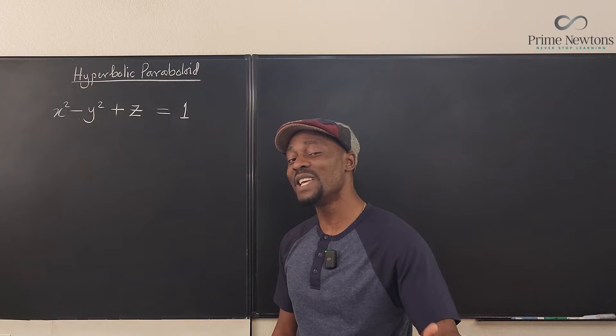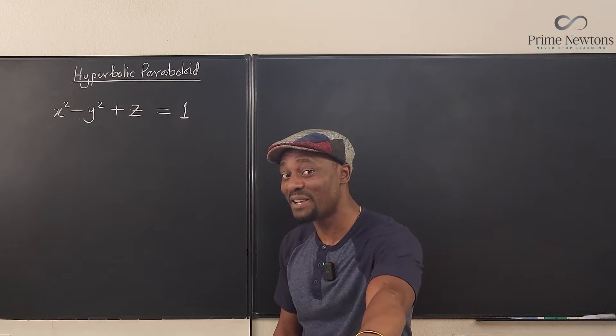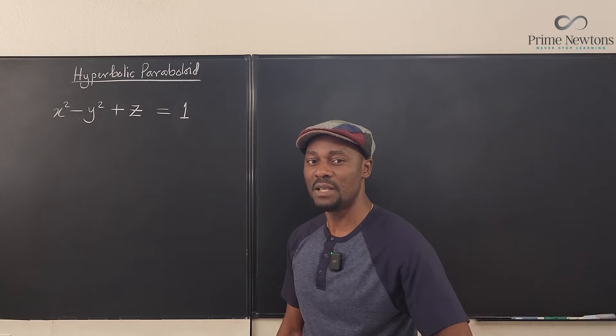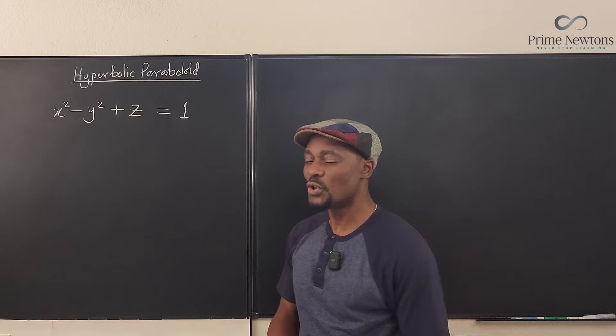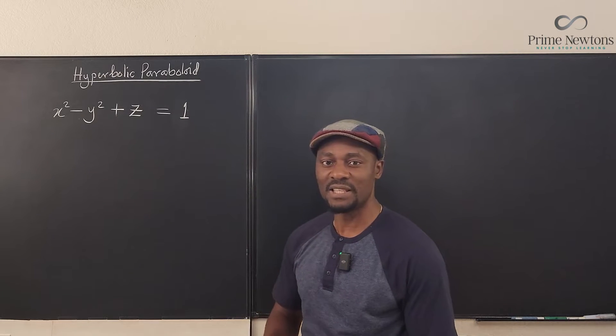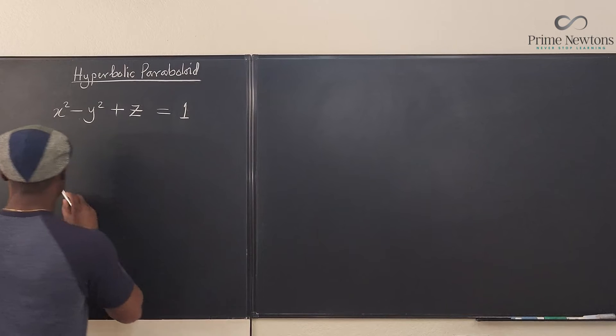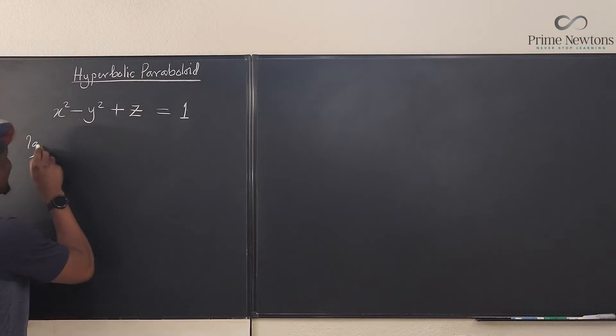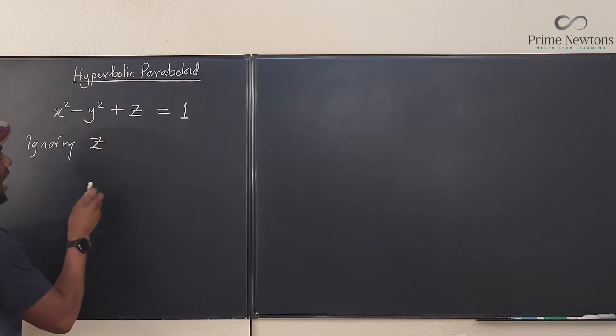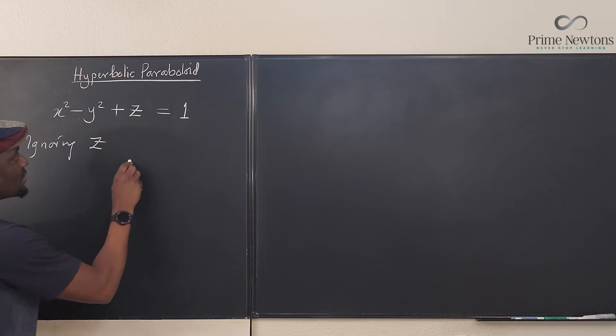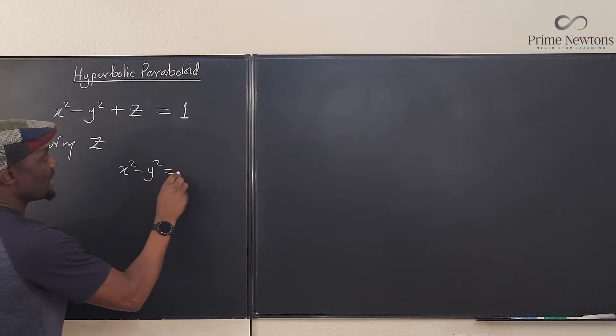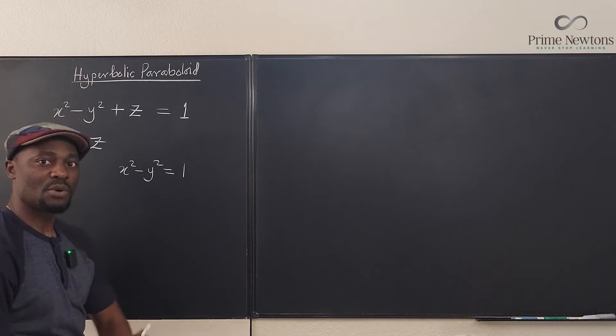So what do you do? How do you identify them? The first thing you want to do is you have to decide which one of the variables you want to ignore. So what I would recommend is start with z. Ignore z, so you're going to act as if z does not exist. Ignoring z, what are you going to have? You're going to end up with x squared minus y squared equals one. What is this shape called?